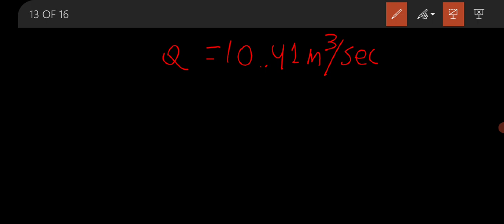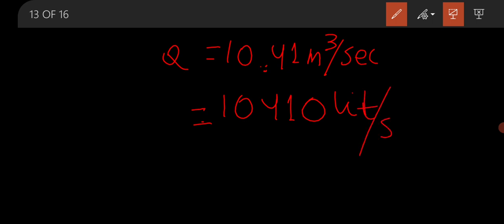To convert this into litre per second, 10.41 metre cube per second equals 10,410 litre per second.